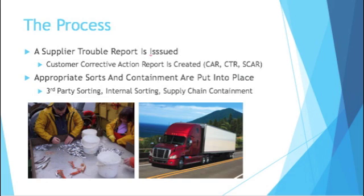When the customer catches the issue, the first thing they'll do is issue a supplier trouble report, also known as a customer corrective action report. It can be called a CAR (corrective action report), a CTR (customer trouble report), or a SCAR — there are all sorts of acronyms but they all mean the same thing. Customer quality always works with supplier quality, so the form might be called a supplier quality issue by the issuing company, but from your company's point of view, it's a customer issue.